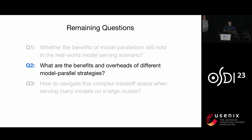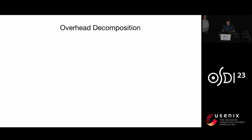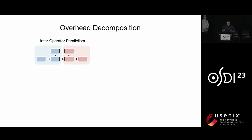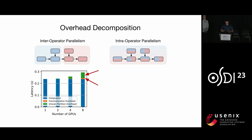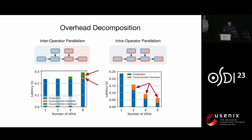From the previous experiments, we can see that the overhead of model parallelism can cause worse performance than the baseline in some cases. So where do the overheads come from? From the training world, current model parallelism strategies can be generally classified into two categories. For inter-operator parallelism, where we cut the neural network into multiple stages and execute in a pipeline fashion, the overhead comes from communication between stages and the overhead of the slowest pipeline stage from the uneven partition.